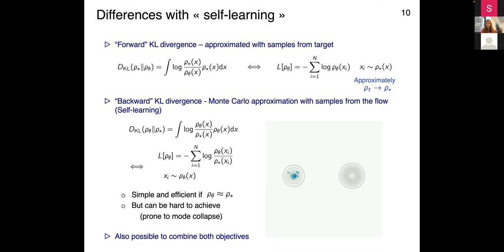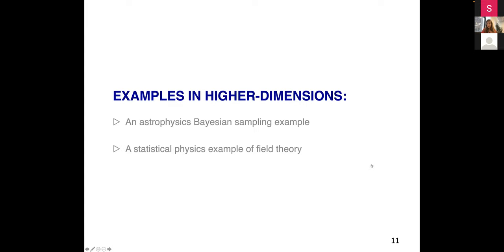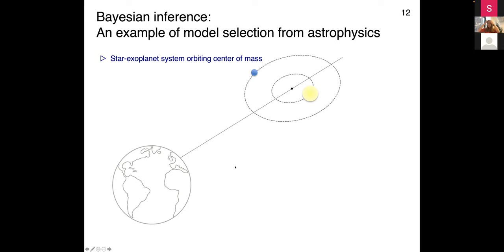Moving to higher-dimensional applications: I'll show two examples. One is an astrophysics Bayesian sampling application, and another is about sampling fields in statistical physics field theory.